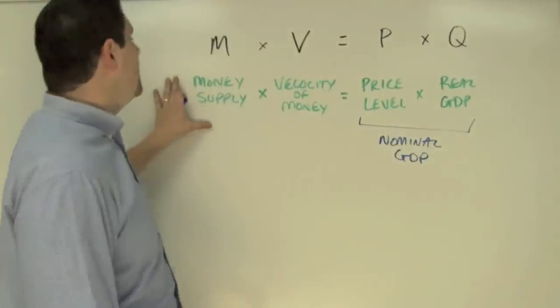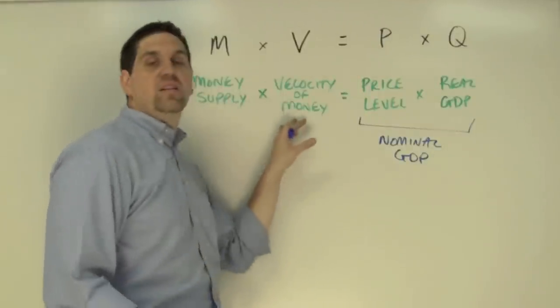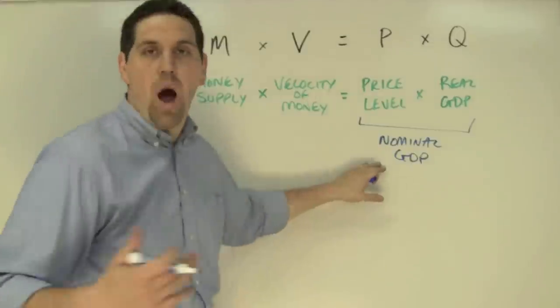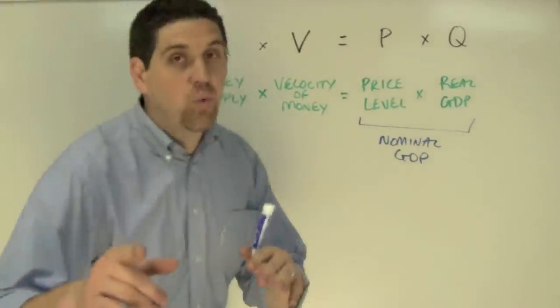So an increase in the money supply or an increase in the velocity of money will increase the nominal output or the nominal GDP. That's why the answer is D.